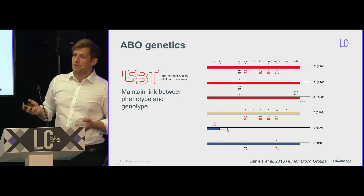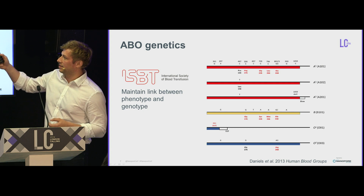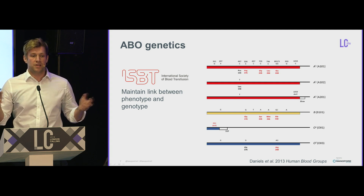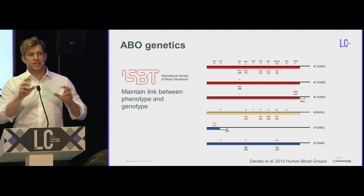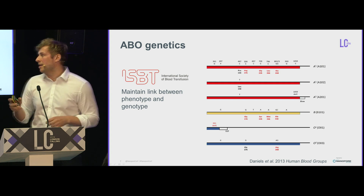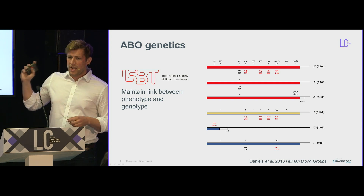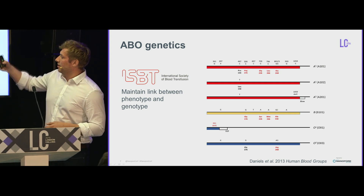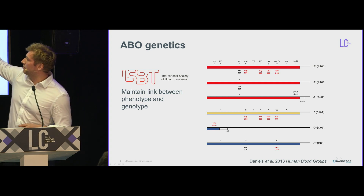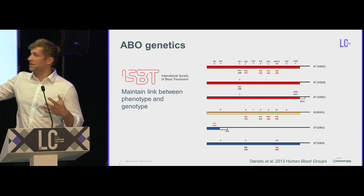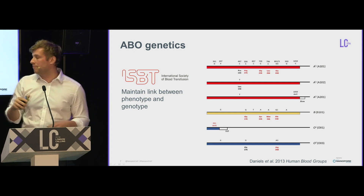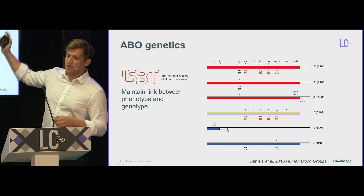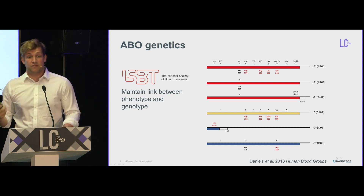So how do we predict a human blood group from genetics? There's an organization called ISBT that maintains a link between phenotype and genotype — huge tables of genetic variants where they say this combination of variants equals this blood group. Using ABO as an illustration: the three red bars represent the proteins encoding blood group A, yellow represents blood group B, and at the bottom is blood group O. The coding positions that encode the difference between A and B are just seven SNPs.